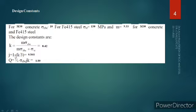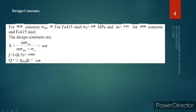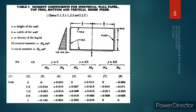J is found as 1 minus K/3. With K = 0.42, we can find the value of J. The last component is Q = (1/2) × sigma_CBC × J × K. Substituting sigma_CBC = 10, and the values of J and K, after simplifying we get Q = 1.80.